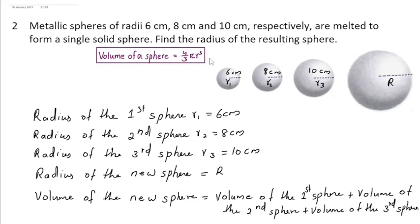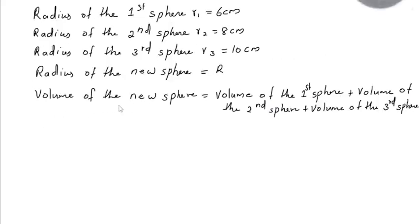Volume of the new sphere is 4 by 3 pi r cube. So volume of the new sphere, 4 by 3 pi capital R cube, is equal to volume of the first sphere, 4 by 3 pi r1 cube, plus the volume of the second sphere, 4 by 3 pi r2 cube, and the volume of the third sphere is 4 by 3 pi r3 cube.